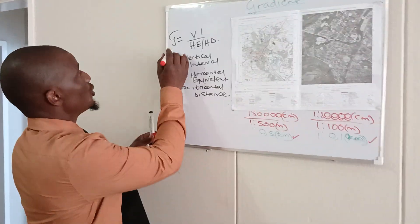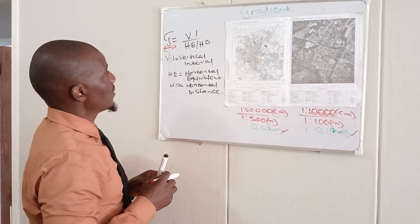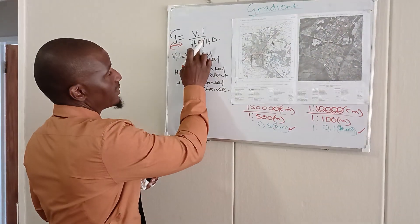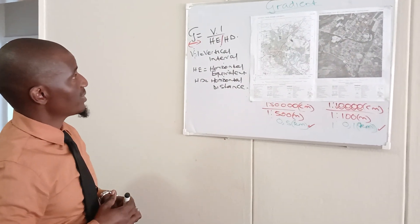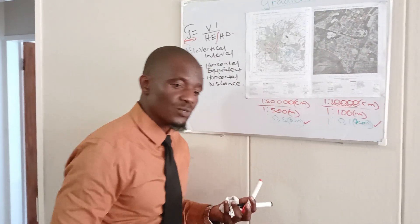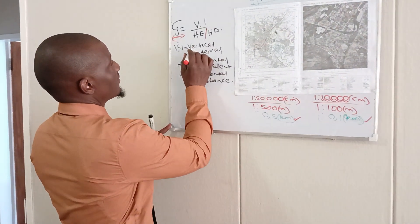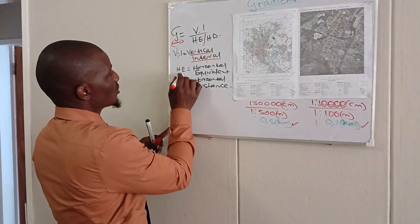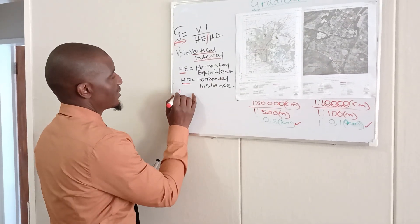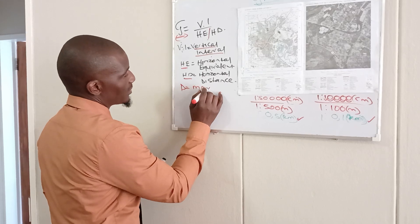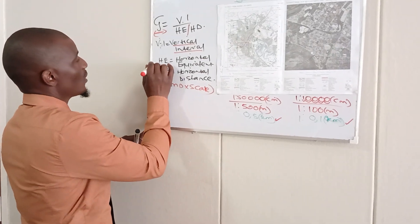I'm going to use G to stand for gradient. So, gradient is equal to vertical interval over the horizontal equivalent, or the horizontal distance. When we talk about the vertical interval, we are looking at the difference in height between two control heights or two given points — it can be a spot height or a trig beacon. The horizontal equivalent, HE or HD, is calculated as map distance multiplied by scale.